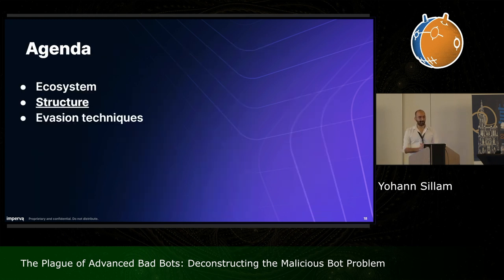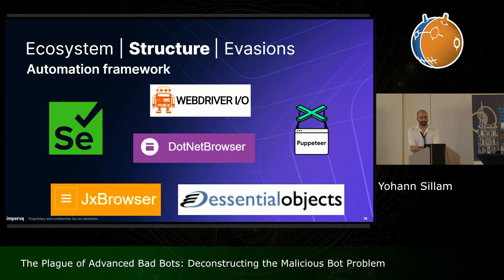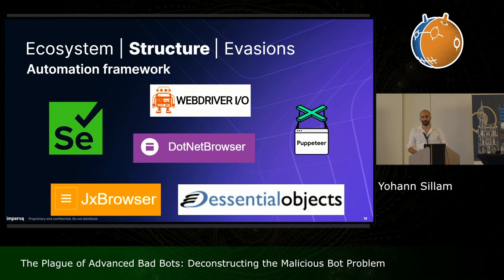Now let's talk about the structure of advanced bots. After investigating roughly 40 different bots, it seems there are two key components that exist in most of them. The first one is the automation framework — a technology that enables remotely controlling a full-fledged browser and making it perform actions. There are many technologies that enable this, for example Selenium, WebDriver.io, .NET browser, etc.